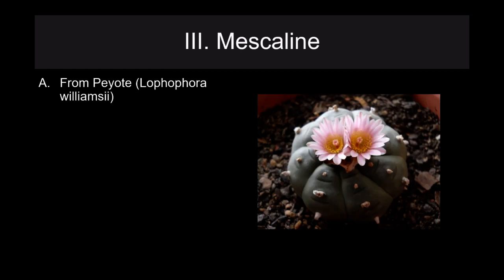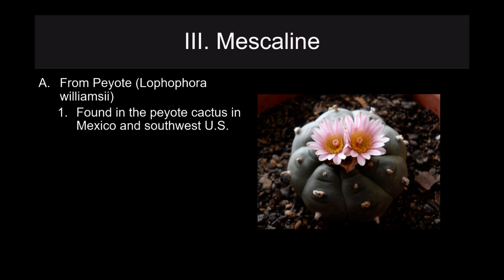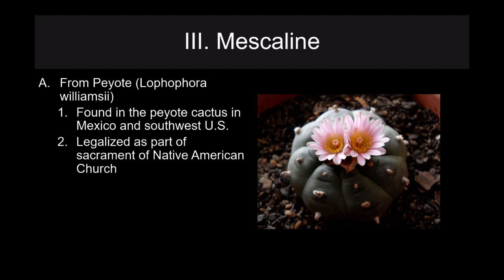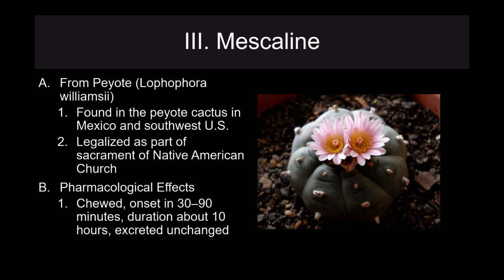Mescaline comes from the peyote cactus, which is found in Mexico and the southwestern United States. It is legalized as part of a sacrament of the Native American church — you must be a member and performing the associated rituals. These are often vision quest drugs. If the buttons are chewed, onset is in about 30 to 90 minutes, duration is about 10 hours, and the drug is excreted unchanged. This is often associated with various hallucinations and vision quests as part of the sacraments of the Native American church.